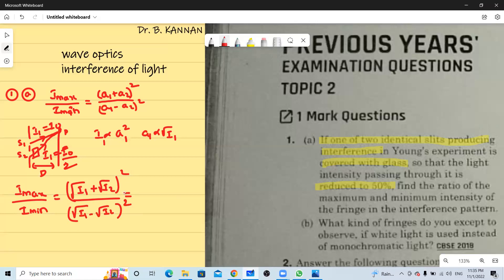So now we substitute for I1. The initial intensity is I naught plus now I2 becomes I naught by 2 the whole square. And in this case this is I naught minus root I1 minus root I1 by 2 the whole square.